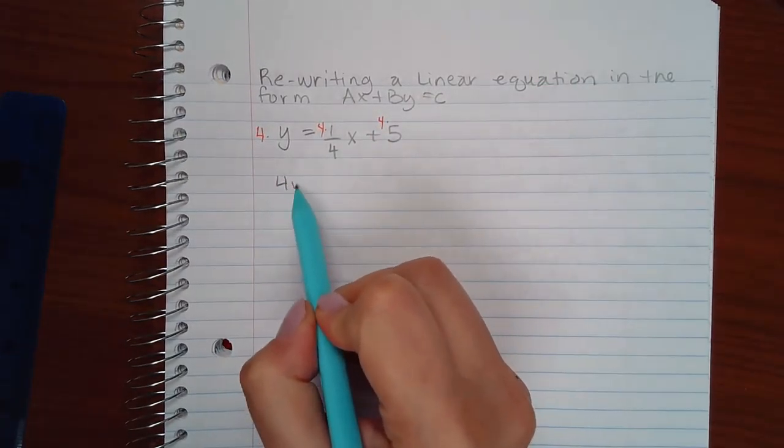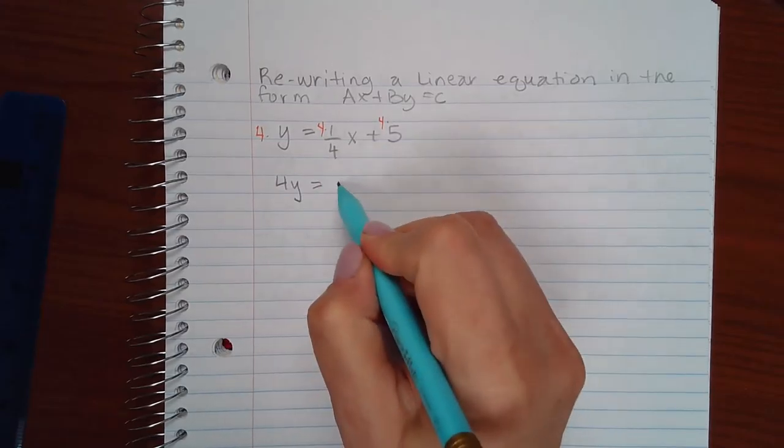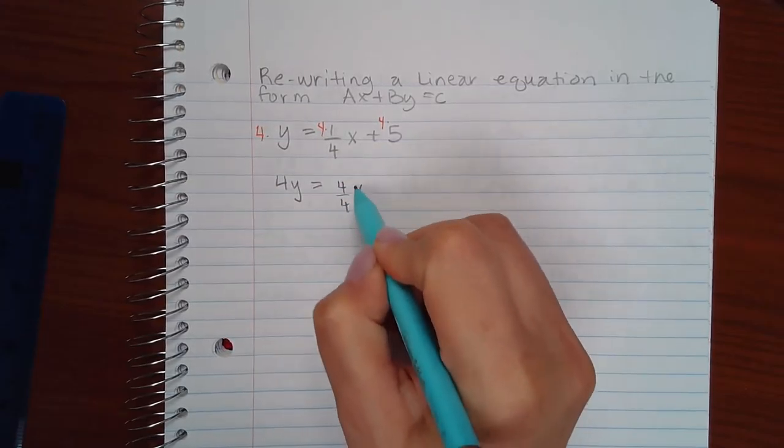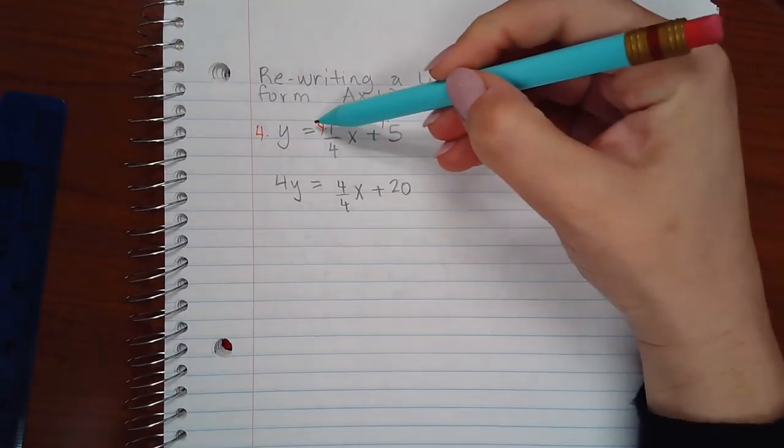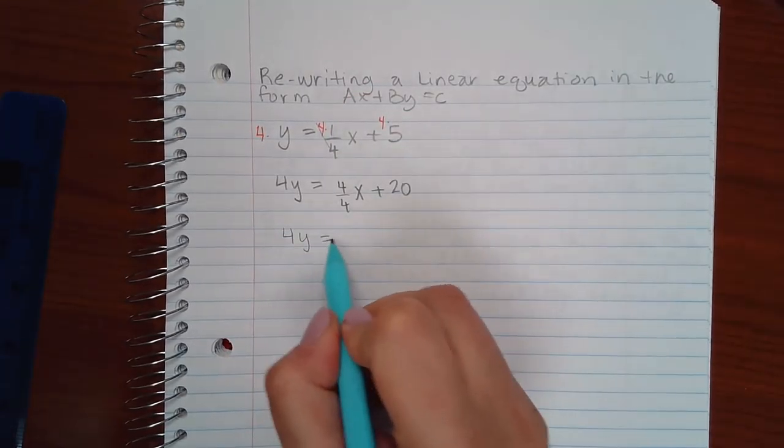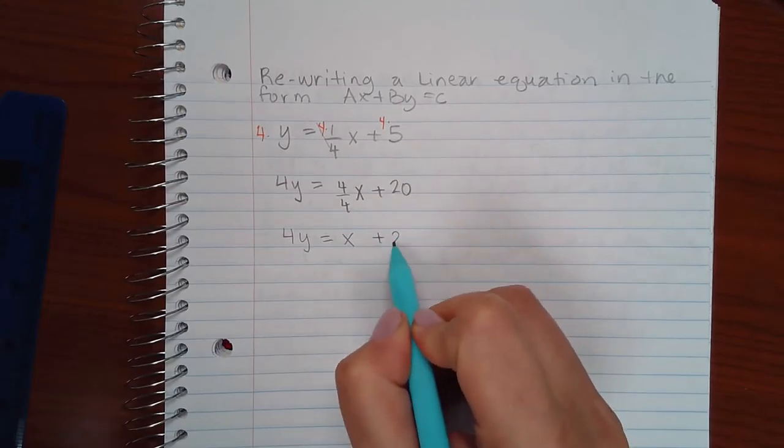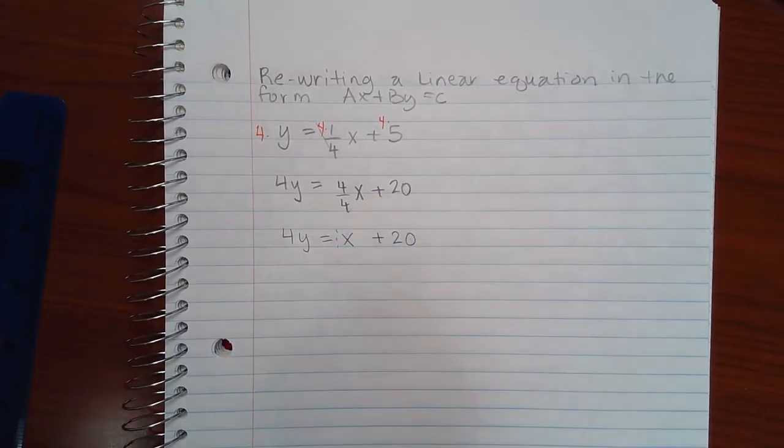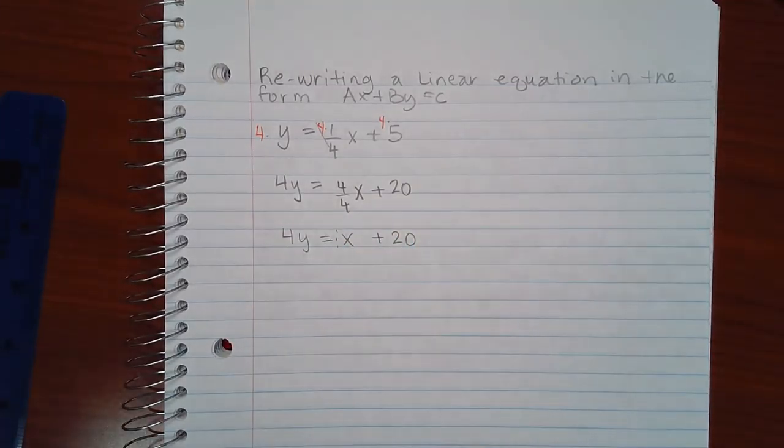I end up with 4y equal to 4 over 4x plus 20. Or if you're used to reducing, canceling that way, you'll just end up with 1x or x. The 1 is usually never written as the coefficient.